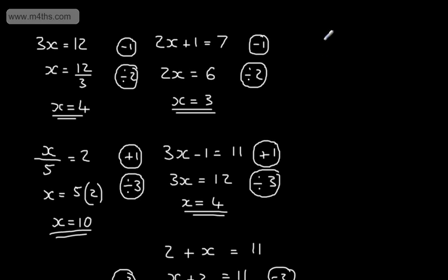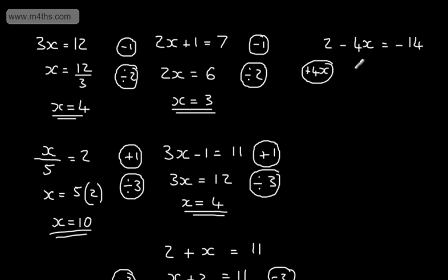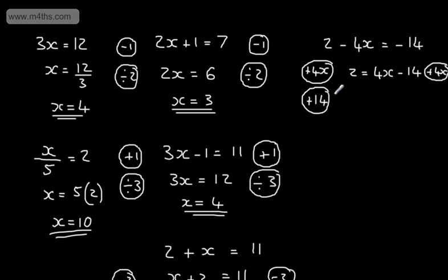We might have something slightly different: 2 minus 4x is equal to minus 14. This looks a bit messy with the minus 4x. What I'm going to do is add 4x to both sides. That gives us 2 equal to 4x minus 14. At this stage I want 4x by itself, so I'm going to add 14 to both sides. Adding 14 to both sides gives 16 equal to 4x.